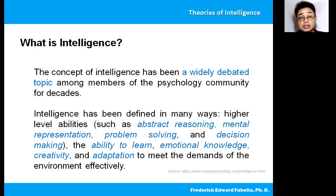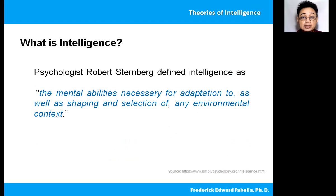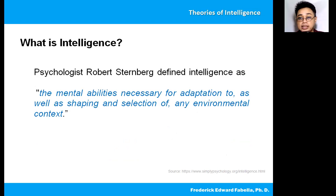There are so many ways by which intelligence has been defined. But let us consider the definition given by Robert Sternberg. He defined intelligence as the mental abilities necessary for adaptation to, as well as shaping and selection of any environmental context.